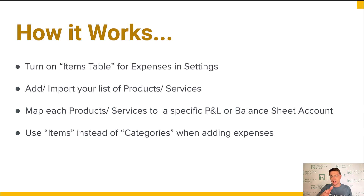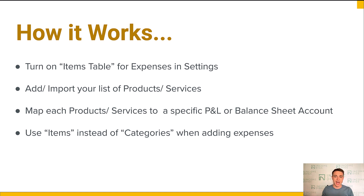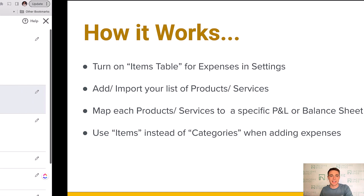Here's how this works — I'm going to demo this all in QuickBooks Online. We're going to turn on the items table, import and add our list of products and services, map those products and services to our P&L or balance sheet, and then use items instead of categories when we add expenses. If you're ready to do that, let's get into QuickBooks and see how it works.